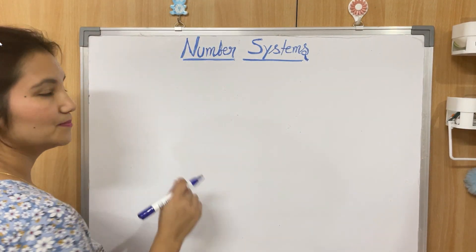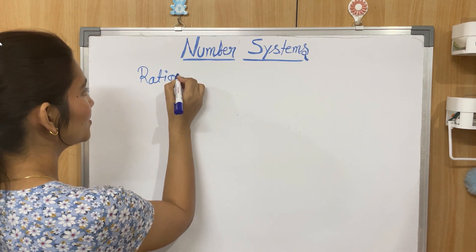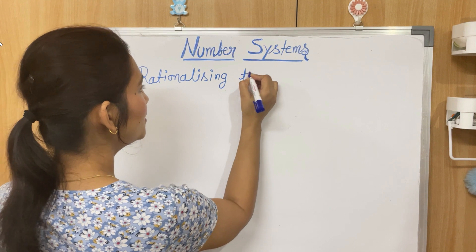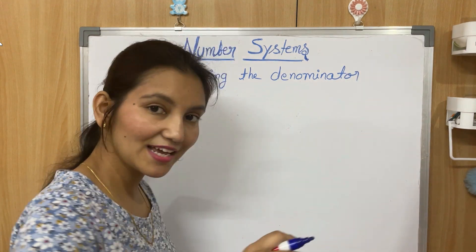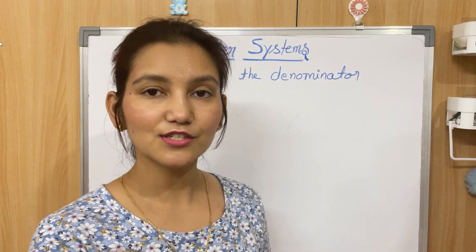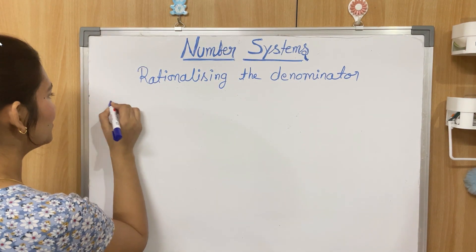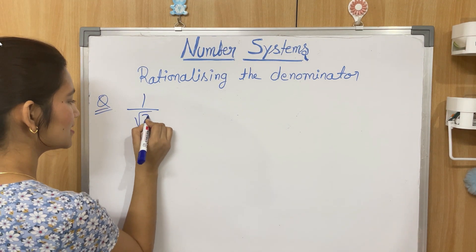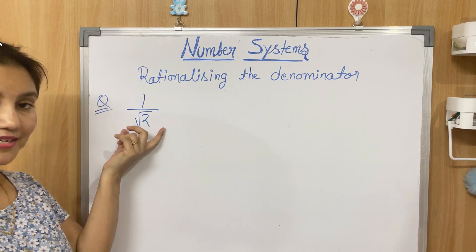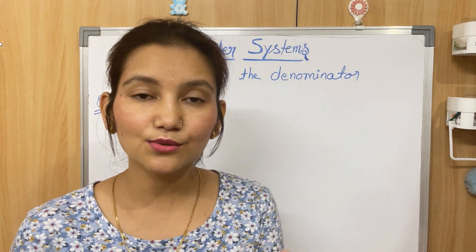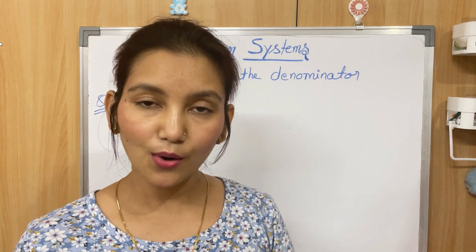The first topic we are going to discuss is rationalizing the denominator. As you can understand from the name, rationalizing the denominator means: the denominator of a number is not rational — it's irrational — and you have to rationalize it. Let's take an example. Here the denominator is √2, and √2 is an irrational number, so you have to make it rational.